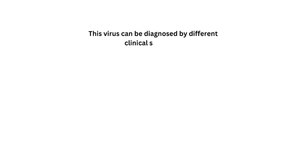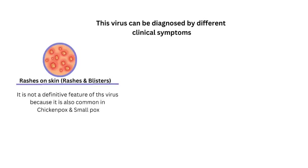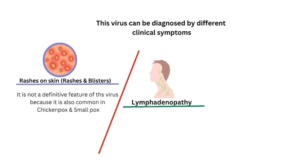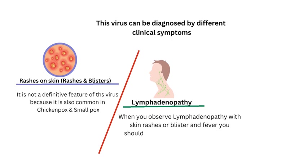This virus can be diagnosed by looking at different clinical symptoms like rashes on the skin, but this is not a definitive feature since symptoms are common to other pox diseases like chickenpox and smallpox. Lymphadenopathy is another sign — when observed together with skin rashes, blisters, and fever, you should consult a physician to check for signs of monkeypox. Final diagnosis is done by performing an RT-PCR test.